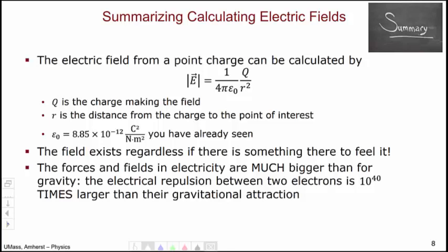To summarize, the electric field from a point charge can be calculated by this expression, which depends upon the charge making the field and the distance from the charge to the point of interest, R. It also depends upon this constant, epsilon naught, that you have already seen. This field exists regardless if there is something there to feel it or not. The forces and fields in electricity are much, much bigger than gravitational forces. As a reference point, say you have two electrons. The electrical repulsion between the two electrons is 10 to the 40 times larger than their gravitational attraction. This concludes this video.